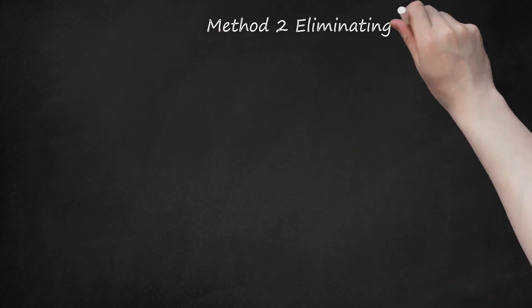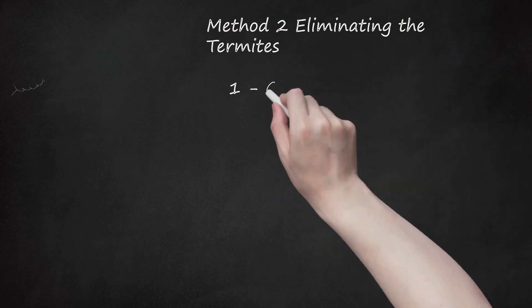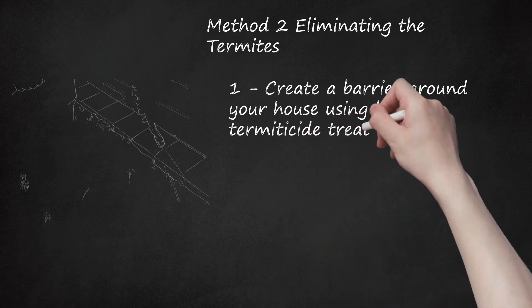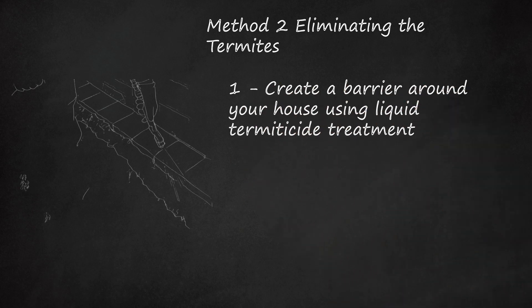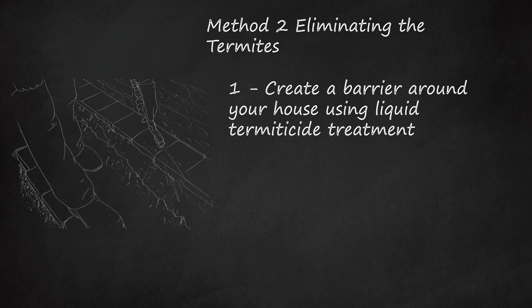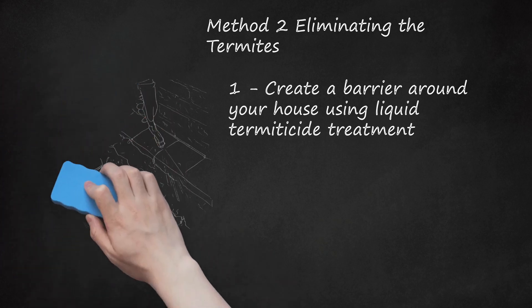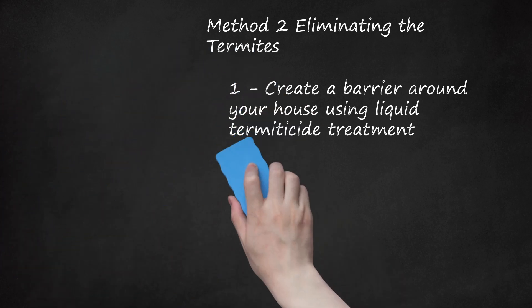Method 2: Eliminating the Termites. Step 1: Create a barrier around your house using liquid termiticide treatment. A termiticide treatment will not only kill termites in the ground, but will protect your house from any termites trying to burrow into it. Create a trench around your house, then spray termiticide in a perimeter around your house in the trench, which will create a natural barrier. This treatment is a lot easier to perform when you are building a new house. Trenching may be necessary if your house is already built.